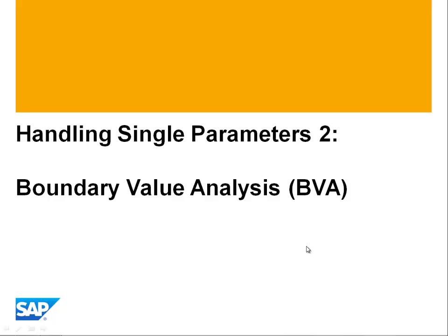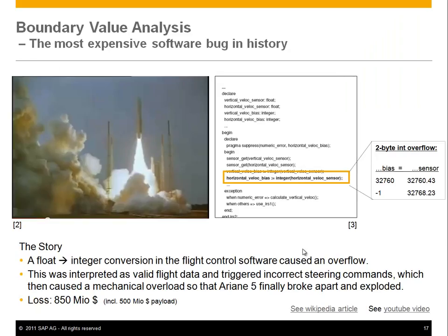The second test design technique we're going to look at is boundary value analysis. A good way to motivate this is to look at the most expensive software bug in history, and that is probably the Ariane 5 crash, where a rocket worth about $850 million exploded because of a software bug.